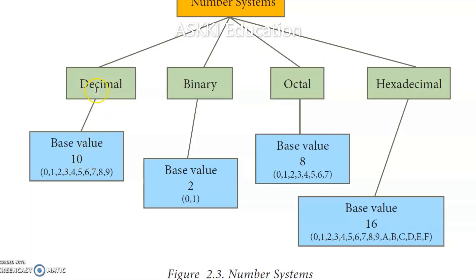In the decimal number system, the digits are 0 through 9 — a total of 10 digits — so the base value is 10. To represent numbers larger than 9, we use combinations of these digits, for example 10 is written as '1' and '0' combined.